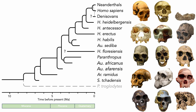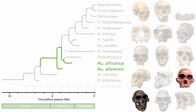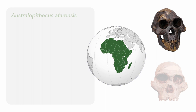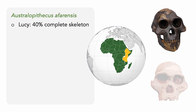The Australopithecines were a highly successful group, especially the early species Australopithecus afarensis, which lived in eastern Africa from 3.9 to 2.9 million years ago, and Australopithecus africanus, which lived in southern Africa from 3.3 to 2.1 million years ago. One of the most famous fossil specimens is a 40% complete skeleton of a young female called Lucy, discovered in 1974 at a dig site in the Afar region of Ethiopia, which is part of the Great Rift Valley. She was named after the Beatles song Lucy in the Sky with Diamonds, which the anthropologists had been listening to on the radio at their base camp.